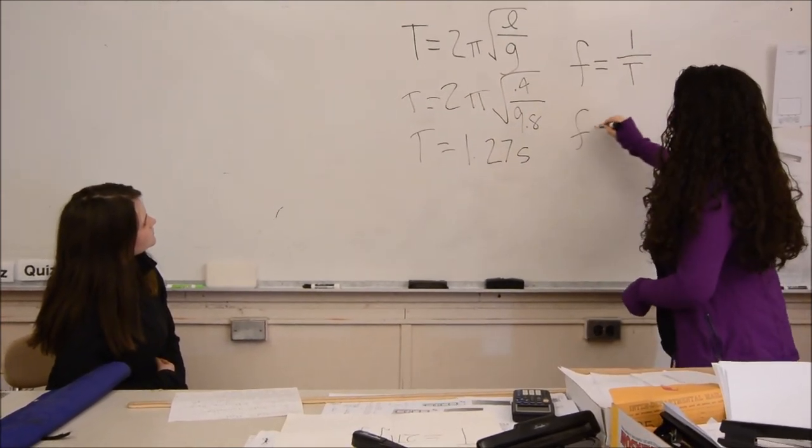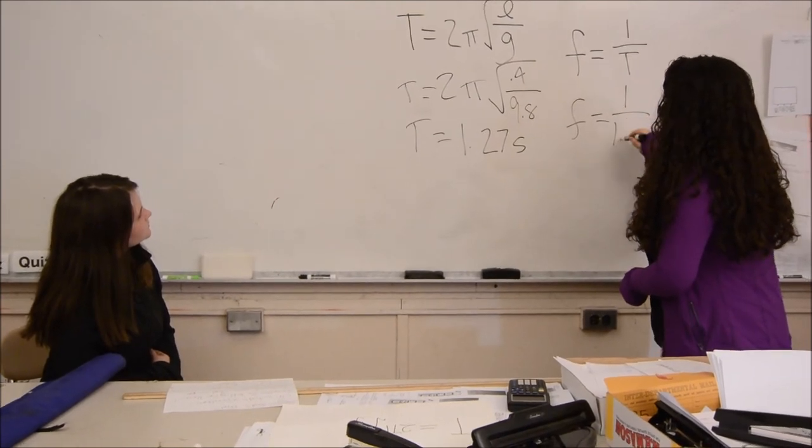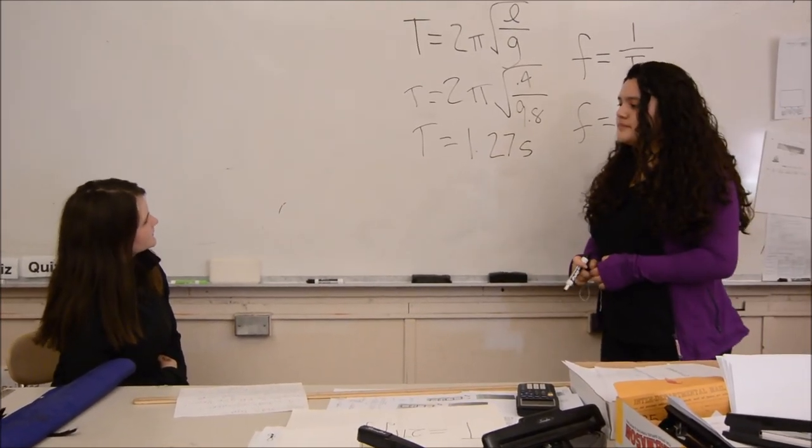And in this case, frequency would equal 1 over 1.27. Oh, okay. I understand it now.